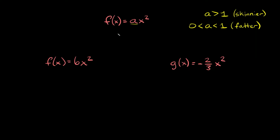If a is a positive number, your parabola is going to open up. And if it's a negative number, it opens down. The other thing to keep in mind is if the number is bigger than one, your parabola gets skinnier, which is also called a vertical stretch.